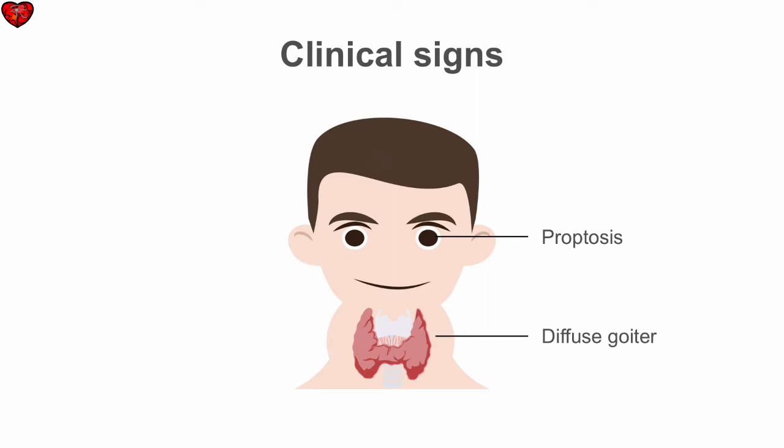The TSH receptor antibodies can also affect the extraocular muscles, which can lead to proptosis or protrusion of the eyes, as well as affect the extraocular movements. Due to the constant stimulation of the thyroid gland by the TSH receptor antibodies, patients also often have a diffuse goiter.